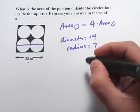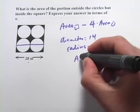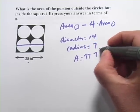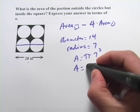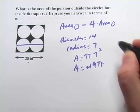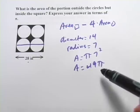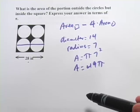So now we can figure out the area of one of these circles. The area is going to be pi times the radius squared, or 49 pi. Now I'm going to stop at 49 pi because it says express your answer in terms of pi. So we'll just leave it there. We won't figure out the decimal.